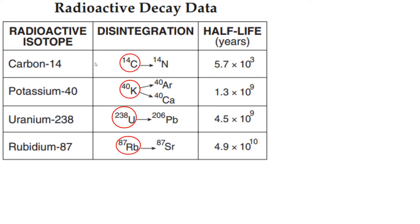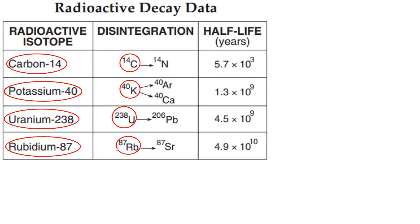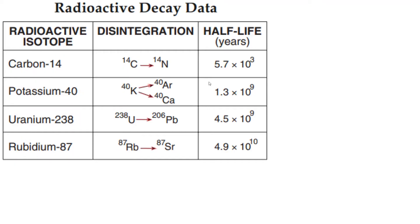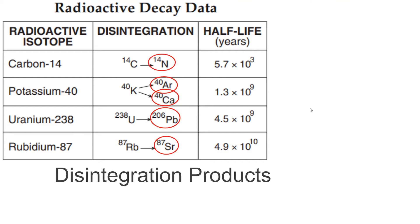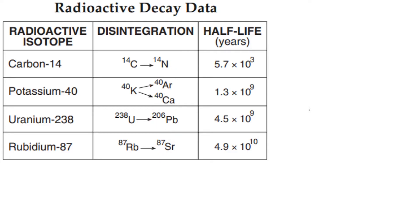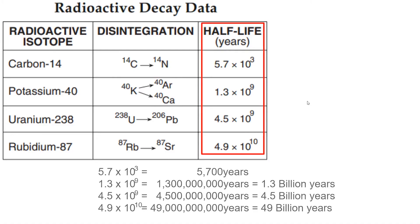Here are the radioactive isotopes — the beginning isotope. Here's where they get disintegrated into their stable products — the disintegration products to be more specific. And here are the half-lives: the time it takes for half of the radioactive isotope to convert itself to the disintegration product.